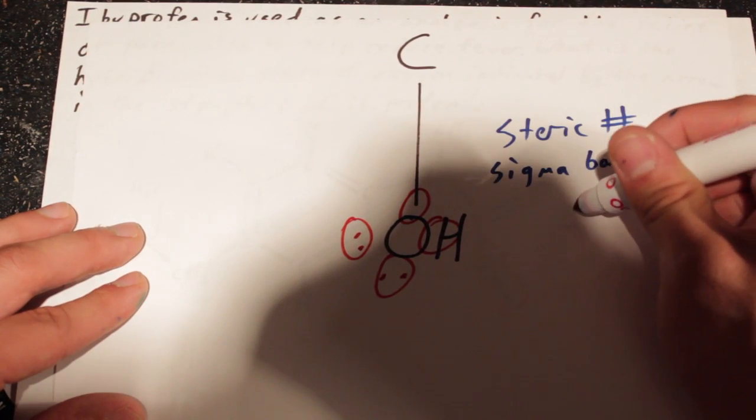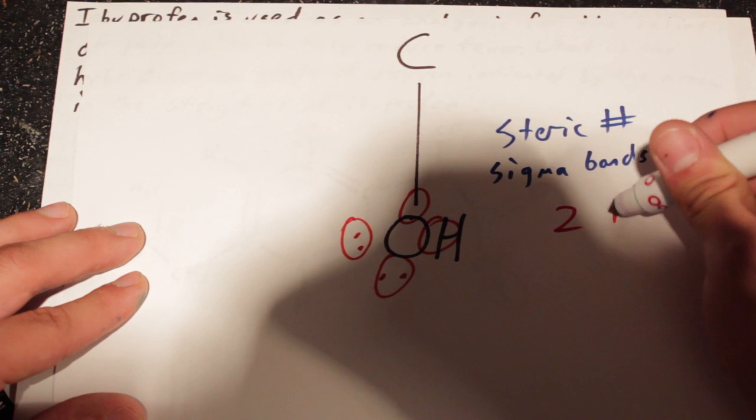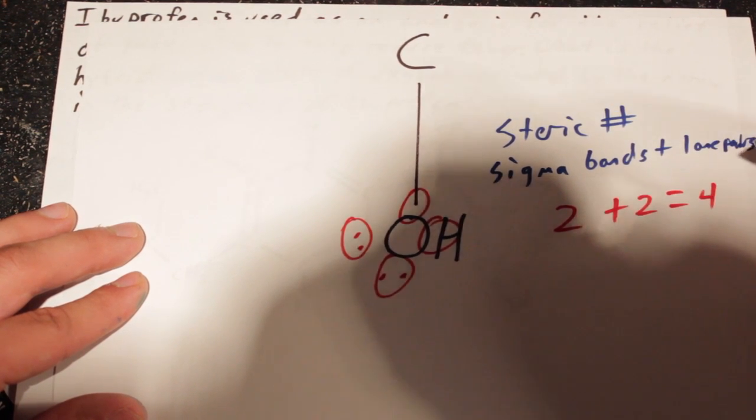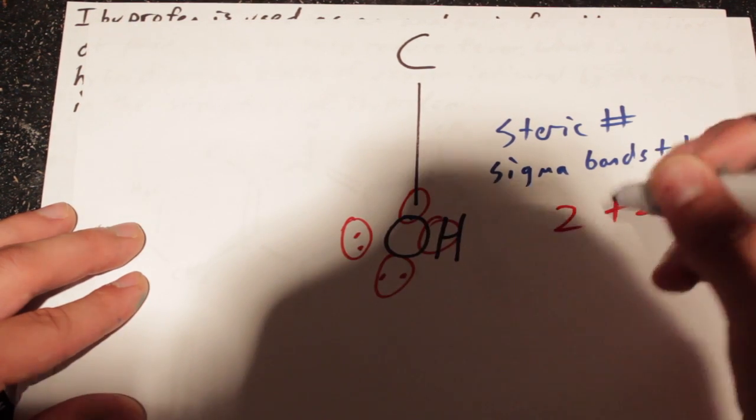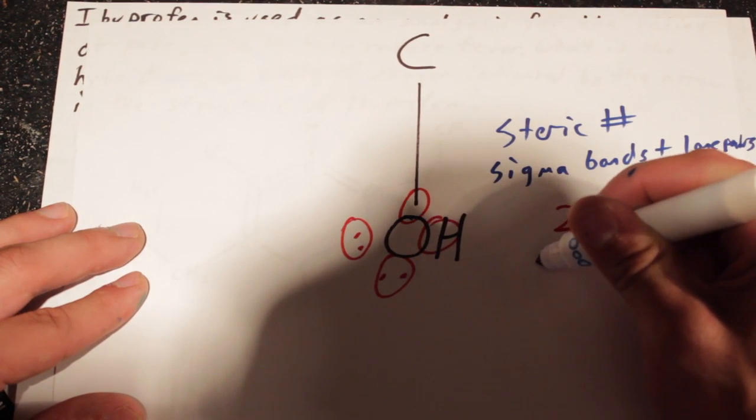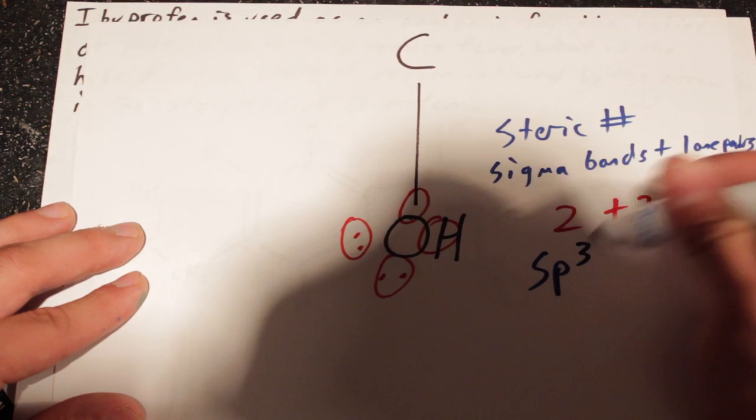That's going to be two sigmas plus two lone pairs equals a steric number of four. And that means that the hybridization has to be sp3.